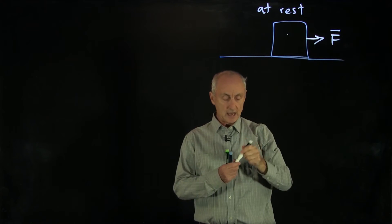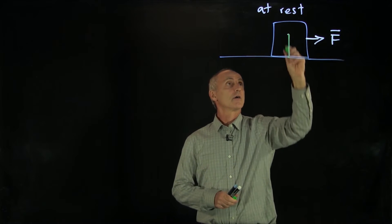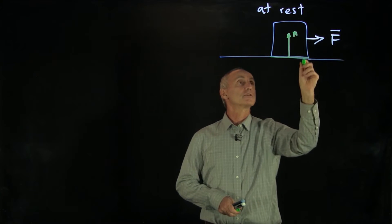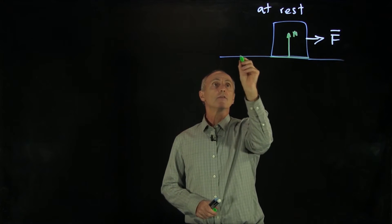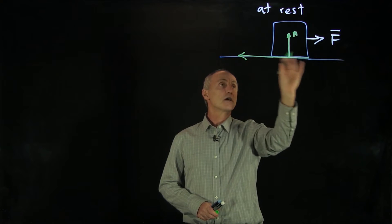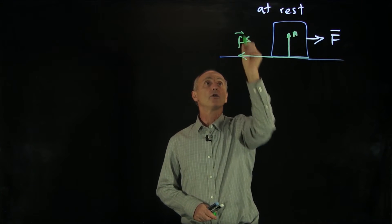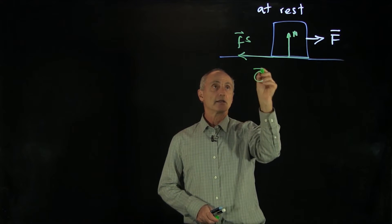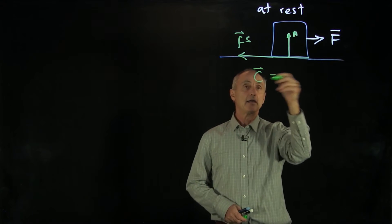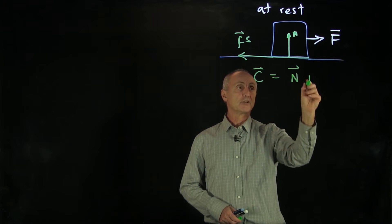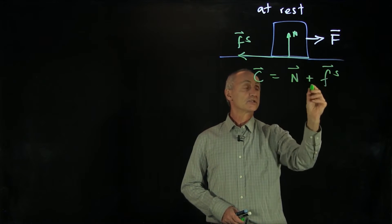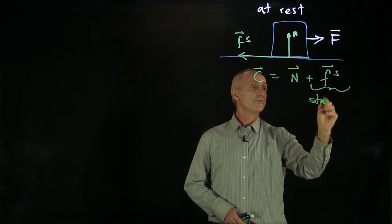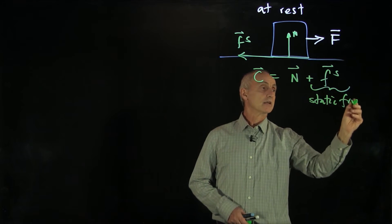Well, we still have the normal force distributed over the surface, but now, because the object is at rest, the contact force now is what we call static friction, the tangential part of that. And the contact force is still the perpendicular part, the normal force, plus the tangential part, which we refer to as static friction.